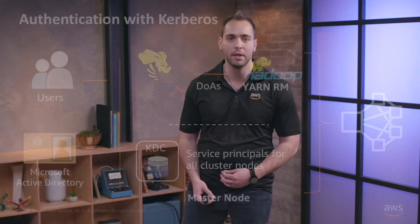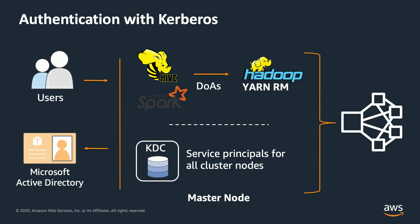When talking about authentication, one of the main authentication mechanisms is through Kerberos. Kerberos is a very commonly used option and method to authenticate applications. What Kerberos does is make sure that applications have tickets assigned from a central key distribution center called the KDC. By retrieving those tickets, users will be able to validate their identities. With Kerberos, users also have the ability to integrate their clusters with Microsoft Active Directory.